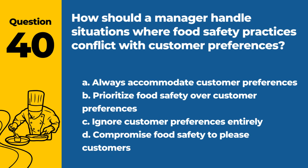Question 40. How should a manager handle situations where food safety practices conflict with customer preferences? A. Always accommodate customer preferences. B. Prioritize food safety over customer preferences. C. Ignore customer preferences entirely. D. Compromise food safety to please customers. Answer: B. In any conflict between food safety and customer preferences, safety should always be the priority to prevent potential health risks.